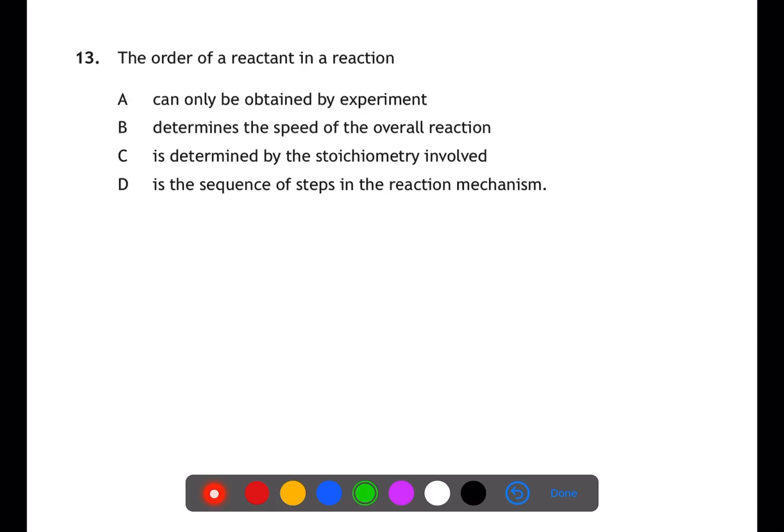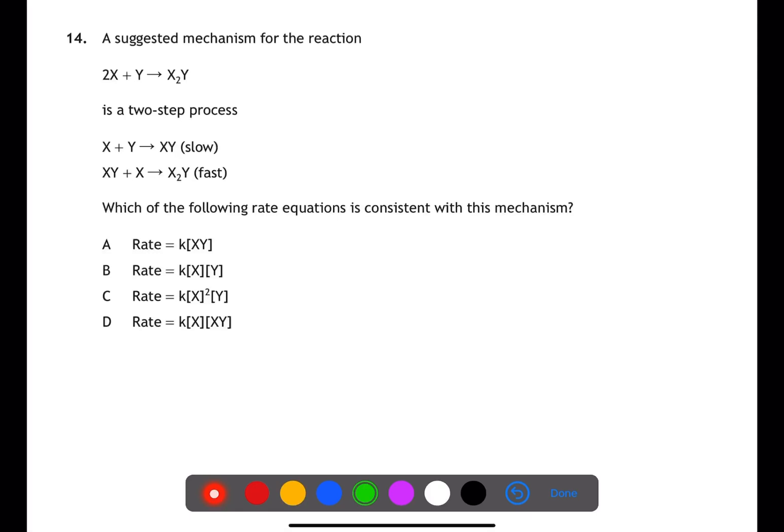In question 14, we are looking at the mechanism for a reaction. It is thought to be a two-step process, with the slow step being X plus Y to give XY. This slow step is the one which will be the rate determining step, and therefore the one which will be represented by the rate equation. This means that we have one molecule of X and one molecule of Y participating in the rate determining step. Therefore, the rate equation will be rate equals k, concentration of X multiplied by concentration of Y.